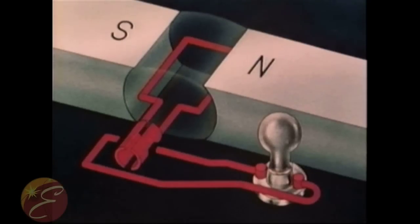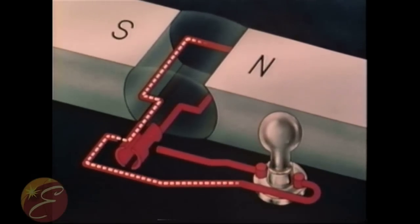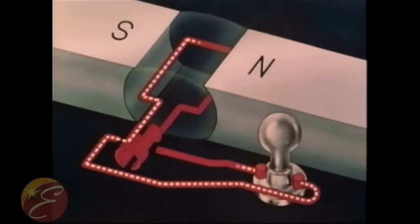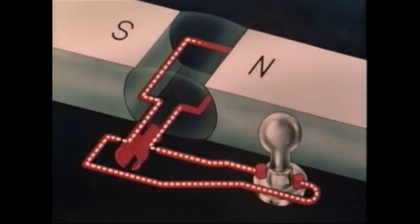Now, as the coil rotates through the first half cycle, the induced current of one direction is collected from the commutator segment. It flows through the external circuit, then back to another commutator segment and into the coil, completing the circuit.